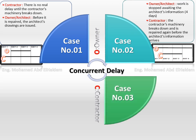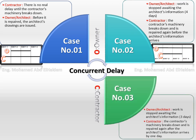Case number 3. Owner situation: work is stopped awaiting the architect's information, three days. Contractor situation: the contractor's machinery breaks down and is repaired again after the architect's information arrives by one day.